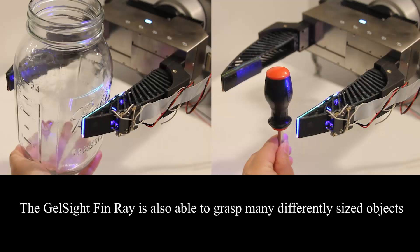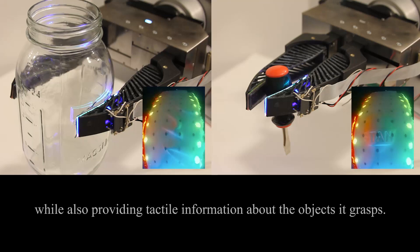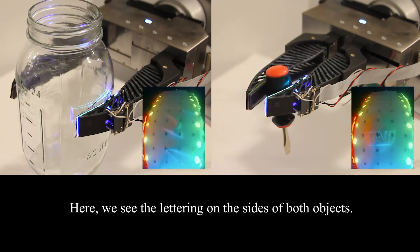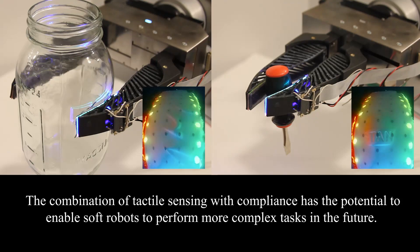The GelSight FinRay is also able to grasp many differently sized objects while also providing tactile information about the objects it grasps. Here we see the lettering on the sides of both objects. The combination of tactile sensing with compliance has the potential to enable soft robots to perform more complex tasks in the future.